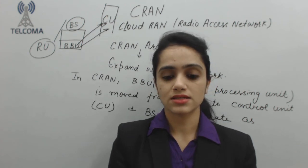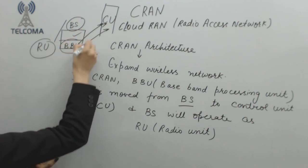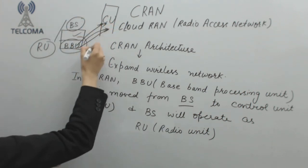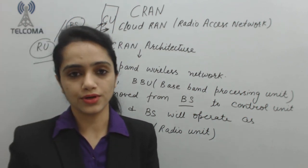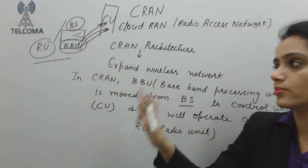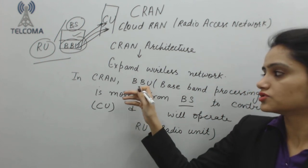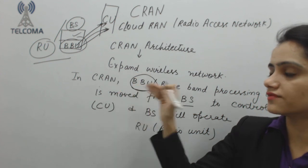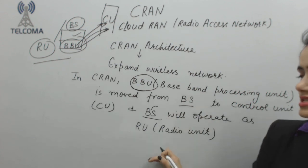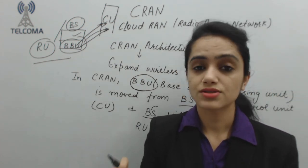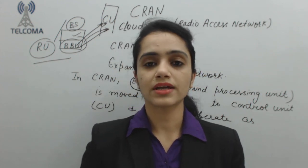In Cloud Radio Access Network, we move the Baseband Unit (BBU) from the base station to the control unit (CU). The base station will then operate as the only Radio Unit. This is the general introduction of Cloud RAN. We will continue with the Cloud RAN topic in our next class.